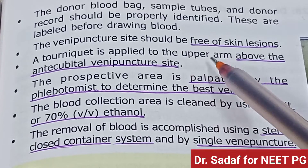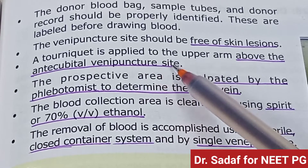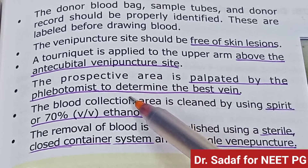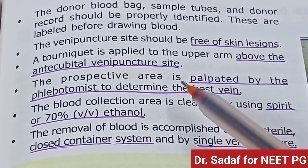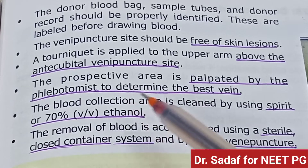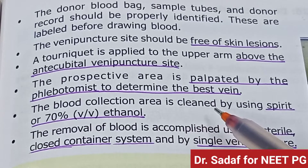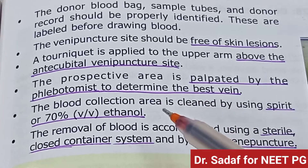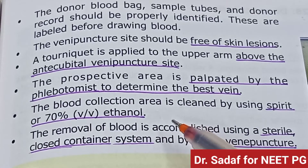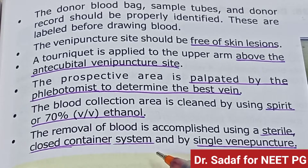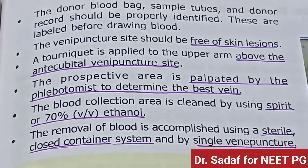A tourniquet is applied above the antecubital venipuncture site. The prospective area is palpated by the phlebotomist to determine the best vein. The blood collection area is cleaned with 70% ethanol.